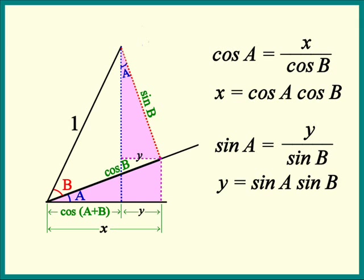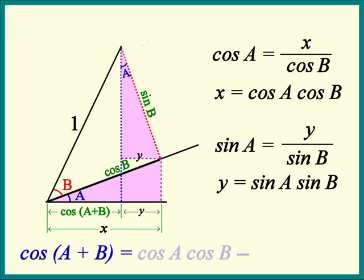Now we can find cosine of a plus b. Cosine of a plus b is x minus y, where x is cosine a cosine b, and y is sine a sine b. That surely explains the minus sign in the middle of that identity. Yes, it sure does.